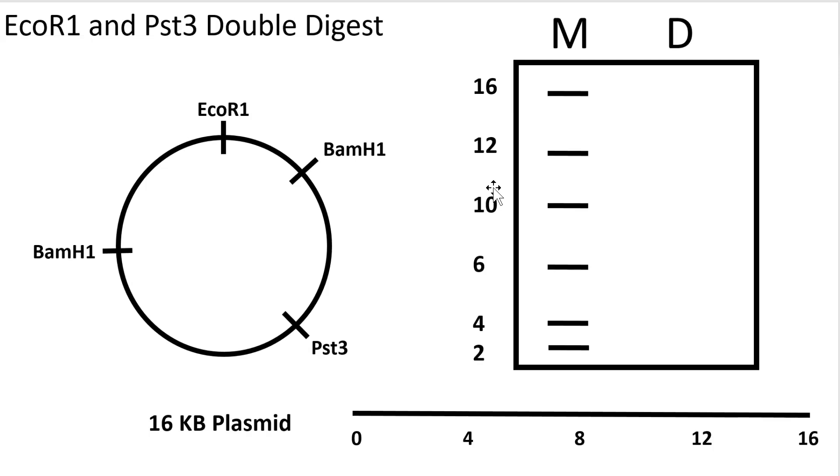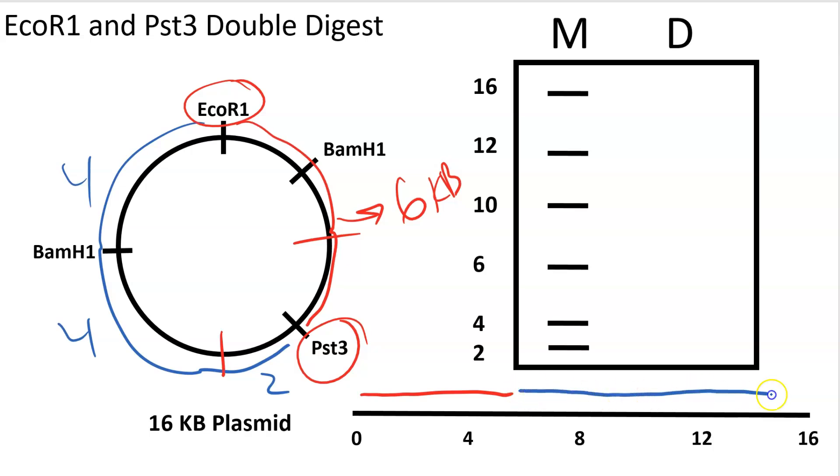In this example, we are doing a double digest with EcoR1 and Pst3. There are only two sites total, one for each enzyme, and because of this we will generate two fragments. Again, I recommend you set up the quadrants. It's easier to visualize how this 16 KB fragment breaks down. So for EcoR1 and Pst3, we have one site here, one site here. And so for this first example, we're going to have a fragment span one quadrant plus 2, so that will be 6 KB, 4 plus 2. And our second one will span one quadrant, two quadrants plus 2, so we have 4 plus 4 plus 2. So again, we'll have a 6 KB fragment and a 10 KB fragment.